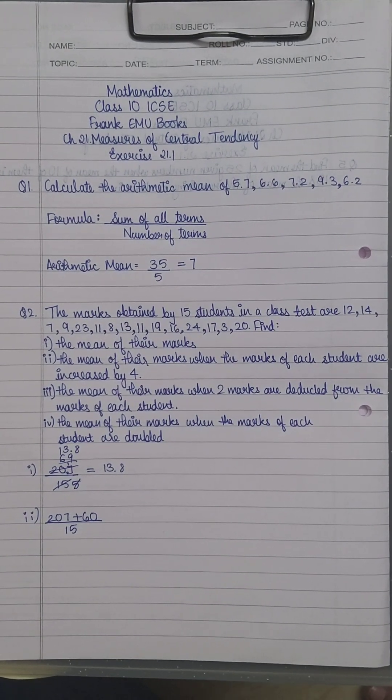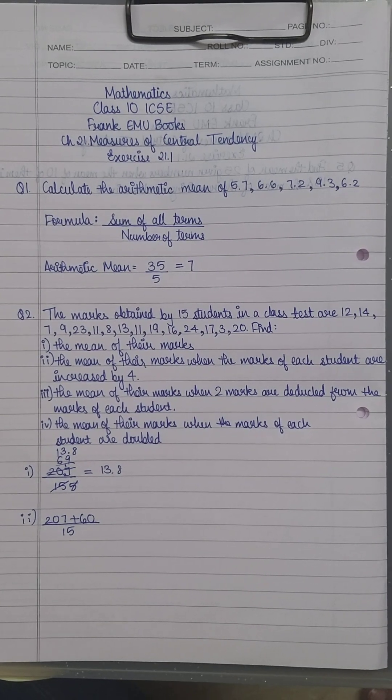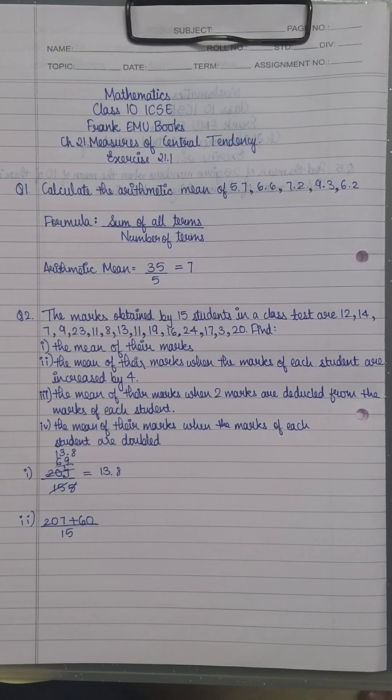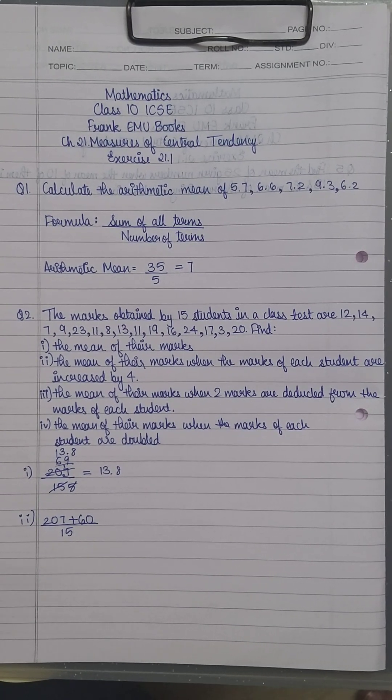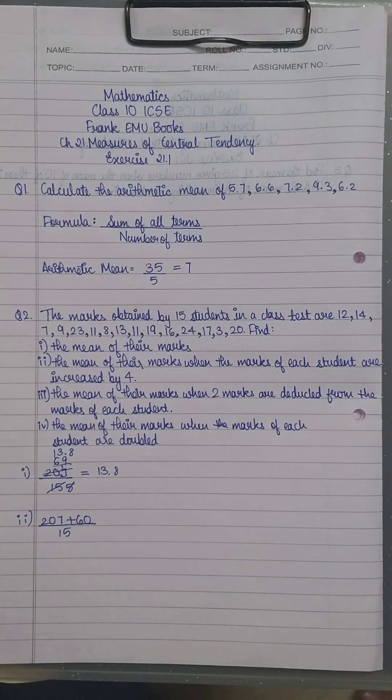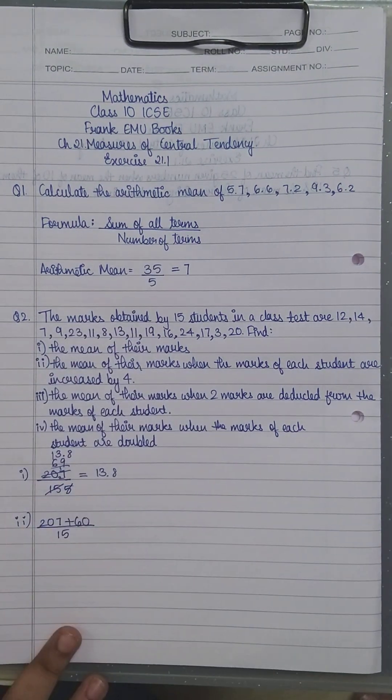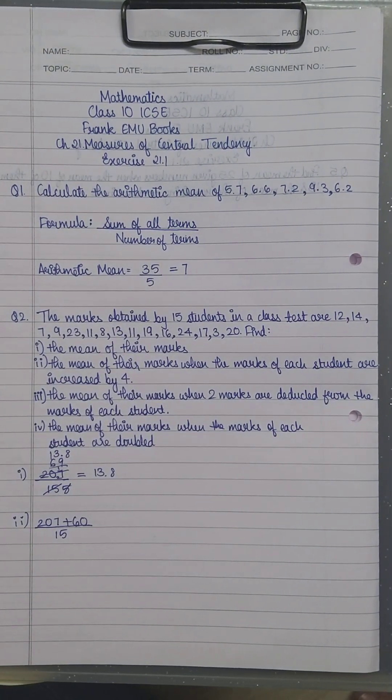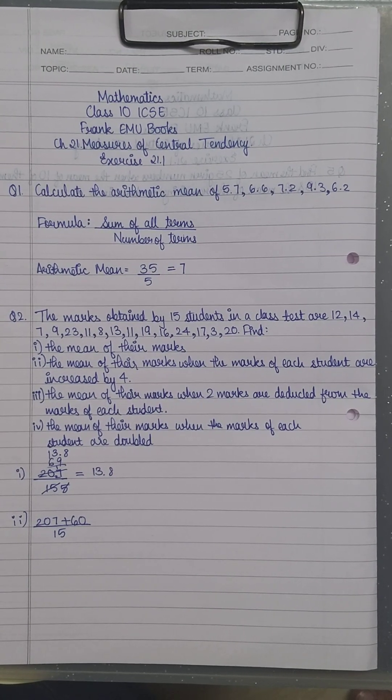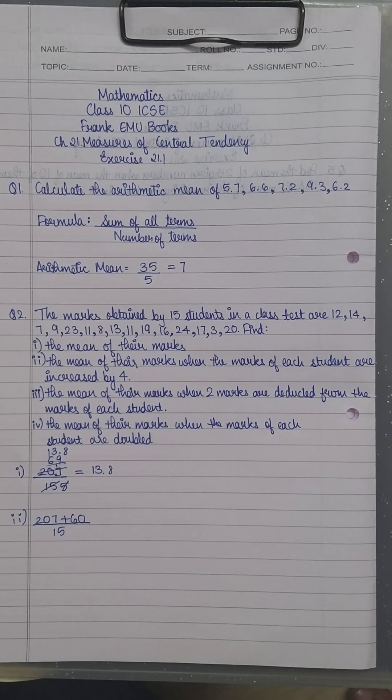If you want to make it look larger in your exam sheet, you can write down each term with plus signs, then divide by the number of terms. I haven't written the formula for the second question here, but in your exams, you must write the formula first, then carry on with your steps. For the first sub-question especially, they need to know you understand the formula. Now you have 267 upon 15.